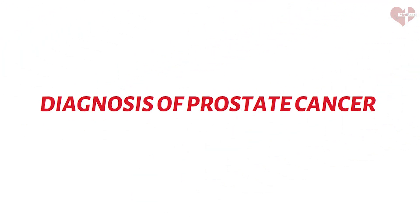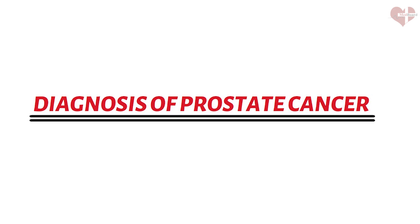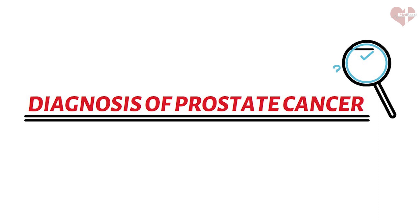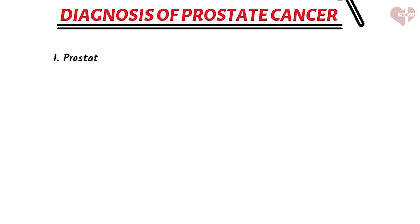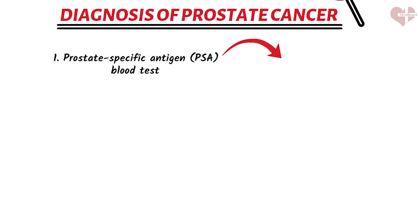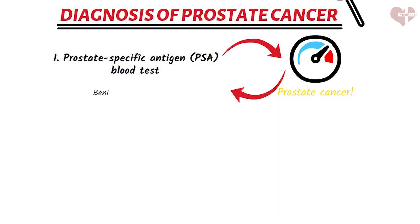Early detection of prostate cancer is key to successful treatment and management of the disease. There are several screening and diagnostic tests used to detect prostate cancer and assess its extent and severity. The most common screening test is the prostate-specific antigen (PSA) blood test. PSA is a protein produced by the prostate gland, and elevated levels of PSA in the blood can be a sign of prostate cancer or other prostate conditions. However, PSA levels can also be elevated due to other factors, such as benign prostatic hyperplasia (BPH) or inflammation of the prostate gland, so a high PSA test result does not necessarily mean that a person has prostate cancer.